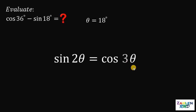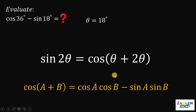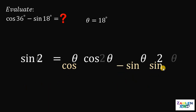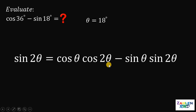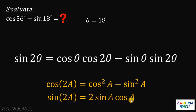Now, this 3 theta can be broken into theta plus 2 theta. We will use the identity cosine of A plus B equals cosine A times cosine B minus sine A times sine B. Therefore, the right-hand side becomes cosine of 2 theta times cosine theta minus sine of theta times sine of 2 theta. Now let's focus on cosine of 2 theta.